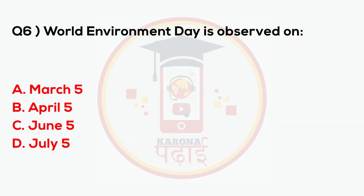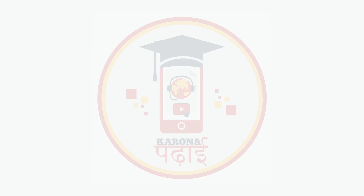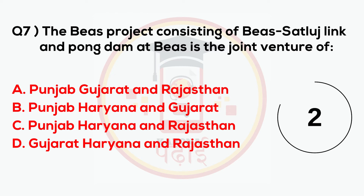World Environment Day is observed on June 5th. The BEAS project, consisting of the Beas-Sutlej Link and Pong Dam, is a joint venture of Punjab, Haryana, and Rajasthan.